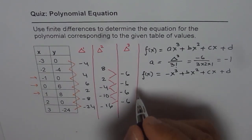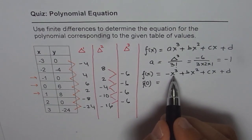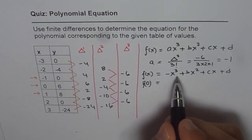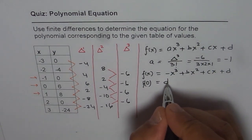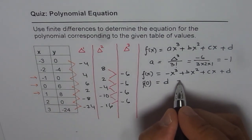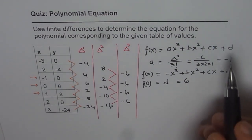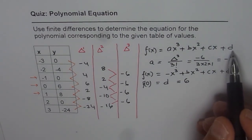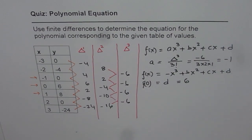If I put x equals 0, then all terms except d become 0, so f(0) equals d. But we know f(0) is 6, therefore d equals 6. So we now have another coefficient: d is 6.